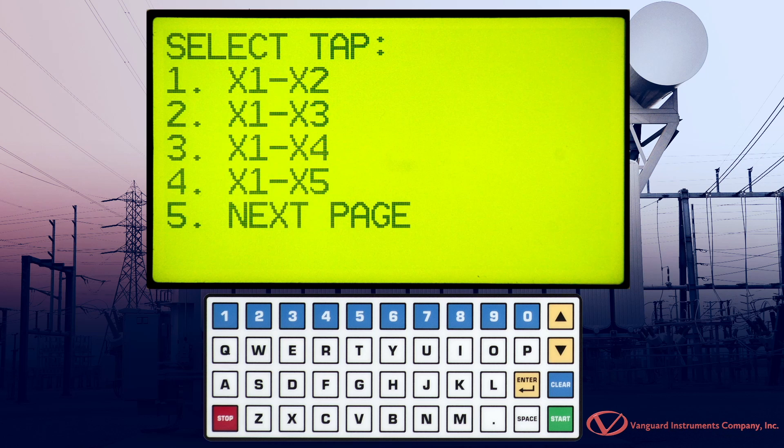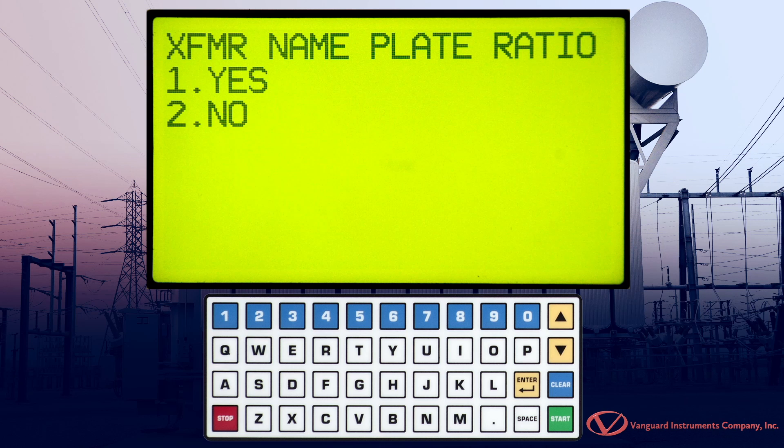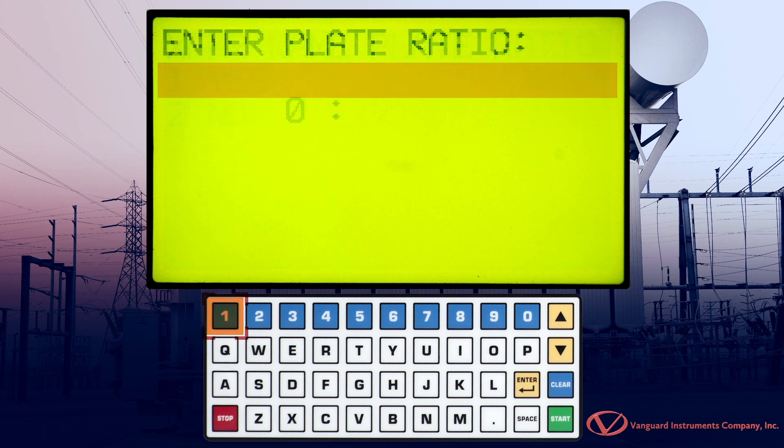For this example, we're using tap X1 to X2 so we'll press the 1 key. We're now given the option to enter nameplate voltage values. Since we know the values for our transformer, we'll press 1 for yes.